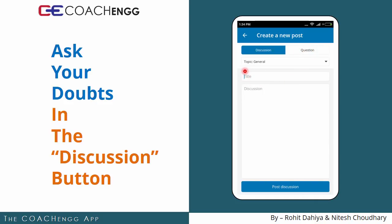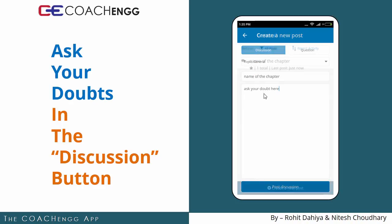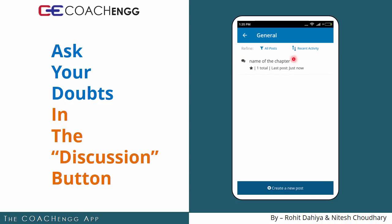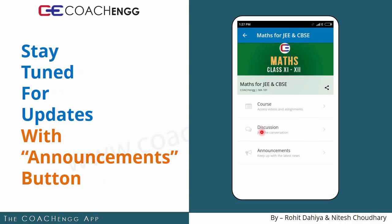Title में please chapter का नाम डालिएगा ताकि उस particular chapter से related चीजें segregate हो जाएं। Discussion के अंदर अपना doubt लिखें। Maths के course में maths का discussion होगा, physics के course में physics के doubts — please courses के अंदर doubts को mix मत करिए। Chapter का नाम और doubt डालके discussion post करें और we'll try to reply as soon as possible। Post करने के बाद वो general category के अंदर अलग से दिखाई देगा।